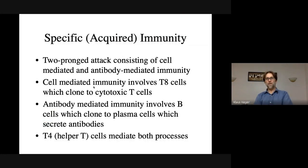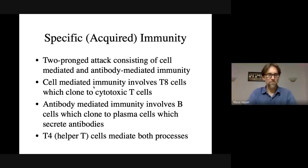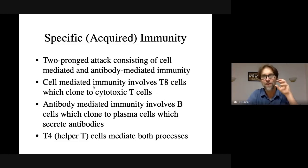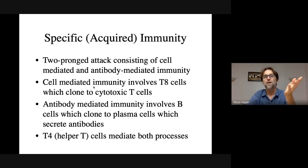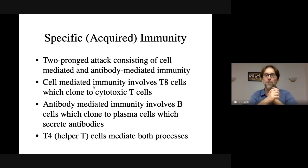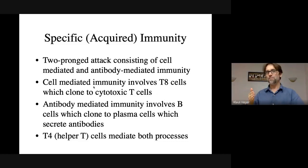Specific immunity is the other part of immunity. A good way to sum up immunity is self versus non-self. All of our cells have very specific markers — proteins on them — that identify these cells as belonging to us. The only exception is blood: red blood cells run a little differently with types A, B, O. The rest of our cells have very specific proteins, and anything with a different protein gets attacked.